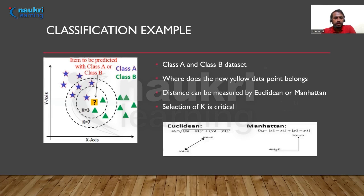Let us look at a classification example. KNN groups data points which have nearby properties. I have a class A represented by stars and a class B represented by green triangles. A new data point comes in, shown as a yellow box with a question mark, and we have to predict which class it belongs to. If I take K equal to three, meaning the number of nearest neighbors is three, it will calculate the distance to the three nearest points to the yellow data point.